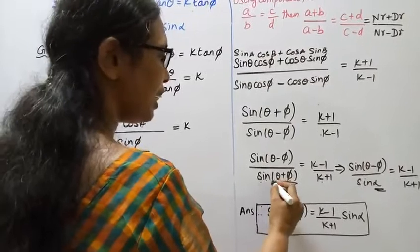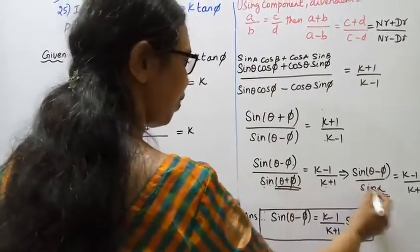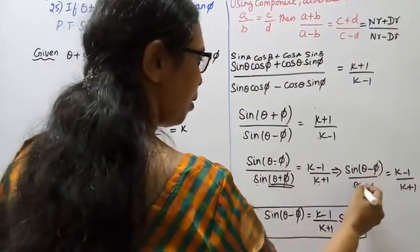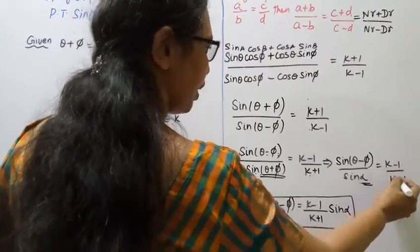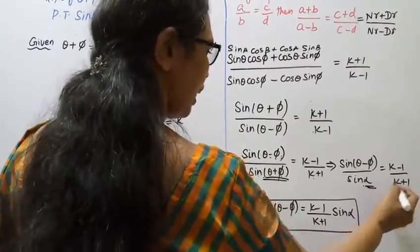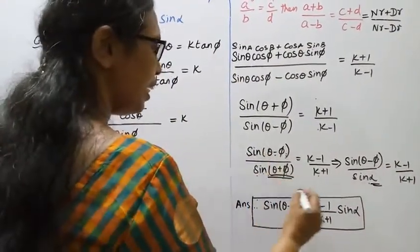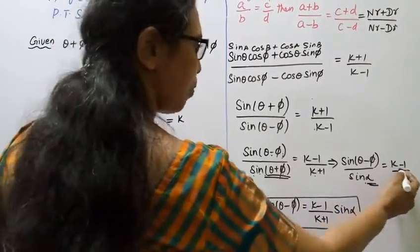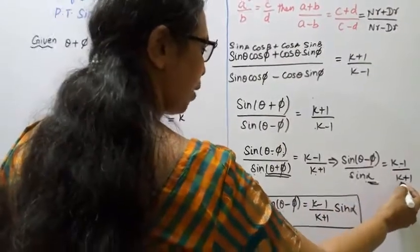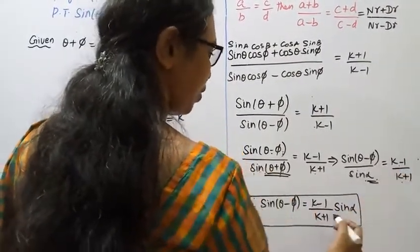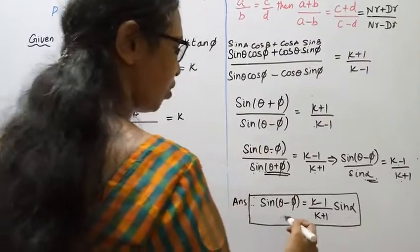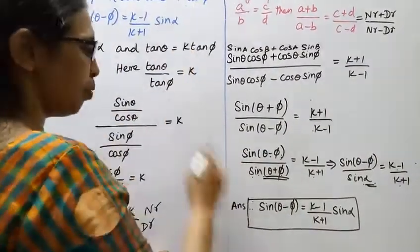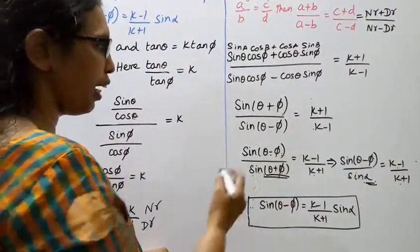Since theta plus pi equals alpha, sin(theta plus pi) equals sin alpha. So we have sin alpha by sin(theta minus pi) equal to k plus 1 by k minus 1. Taking reciprocals and rearranging: sin(theta minus pi) equal to (k minus 1) by (k plus 1) times sin alpha. This is what we had to prove.